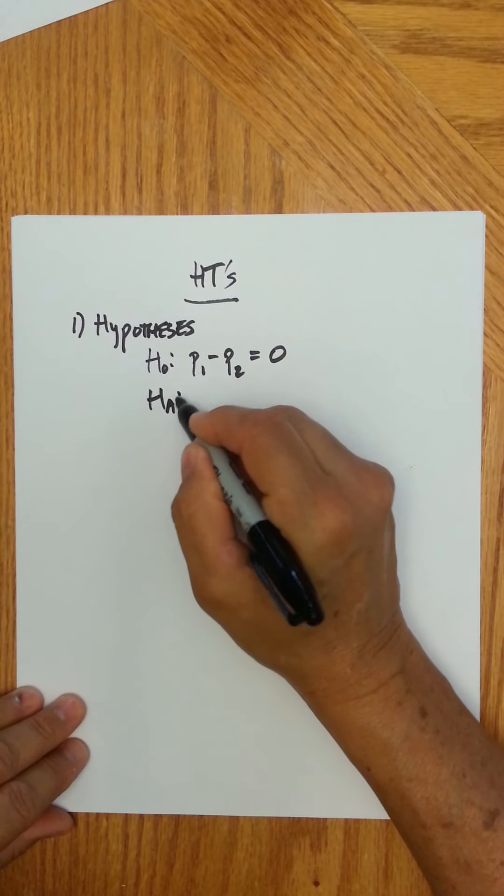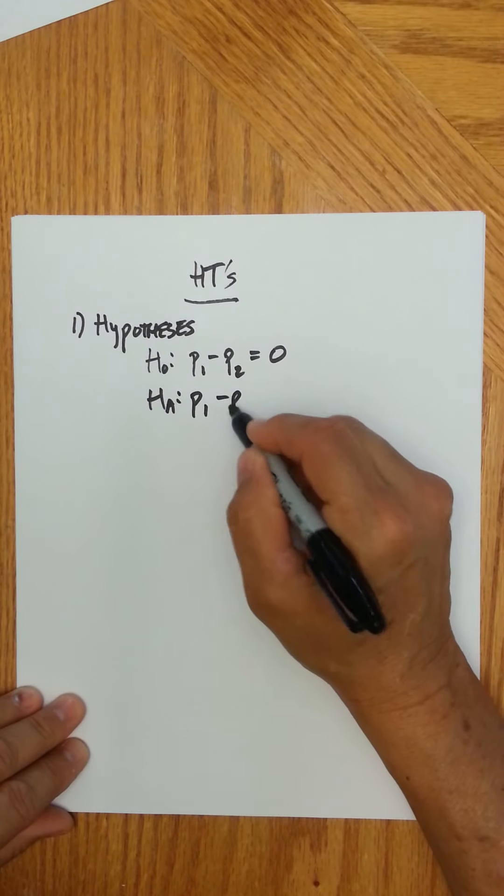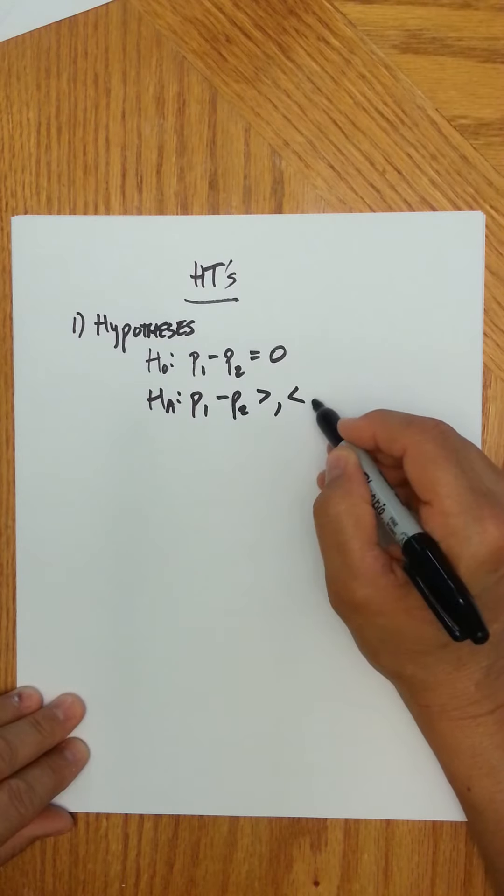And then some alternative, so you're going to have either p1 minus p2, either greater than, less than, or not equal to zero.